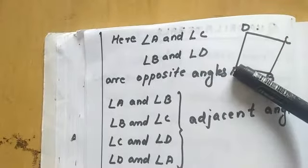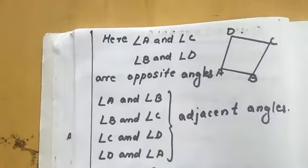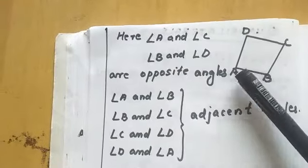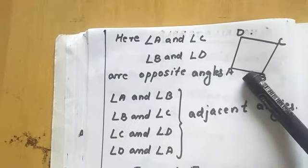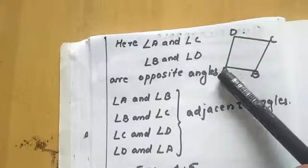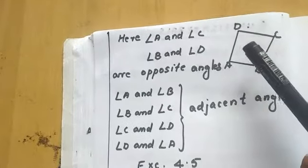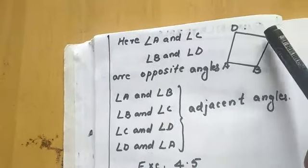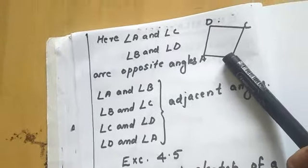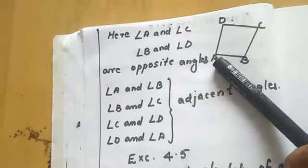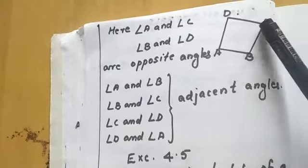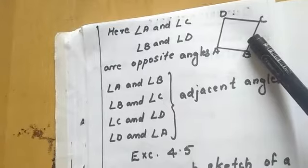Next are opposite angles. Angle A and angle C are opposite angles because they have no common sides. But angle A and angle B are adjacent angles because they share side AB. Similarly, B and D are opposite angles, while D and A, C and D, and C and B are adjacent angle pairs. Adjacent angles have a common side — they will be the endpoints of that side.